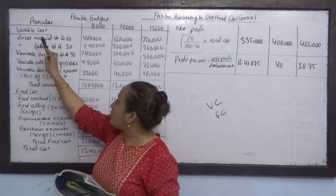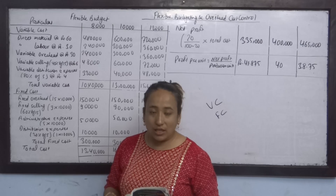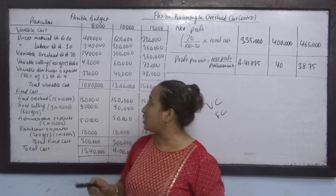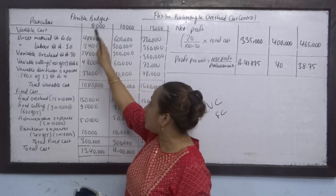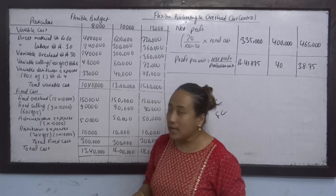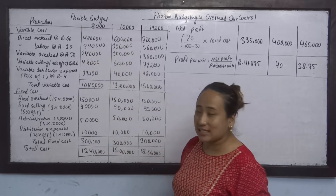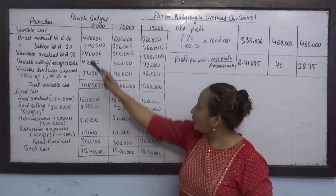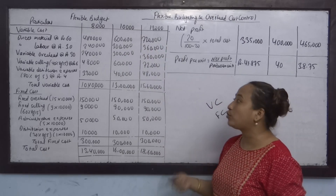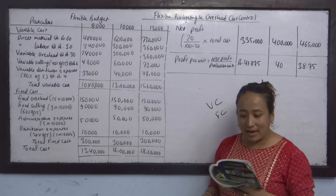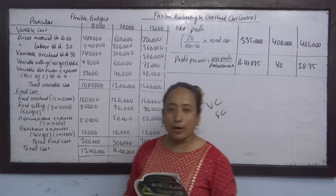Direct material is a variable cost at 60 per unit. So 60 into 8,000 is 4,80,000. Then 60 into 10,000 is 6,00,000. And 60 into 12,000 is 7,20,000. That is the direct material calculation.